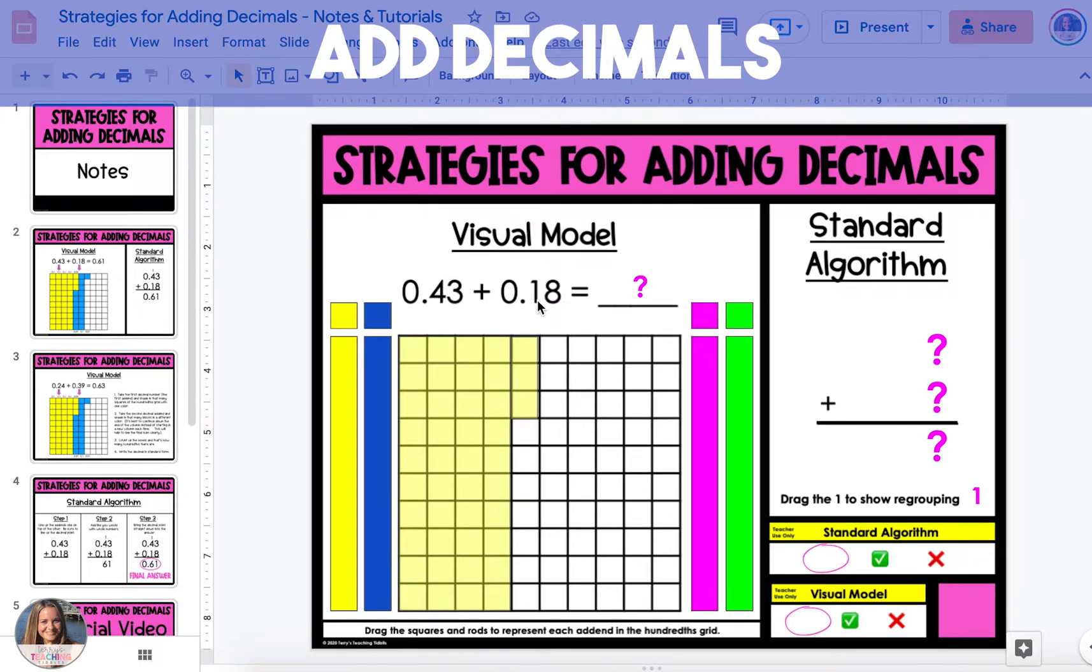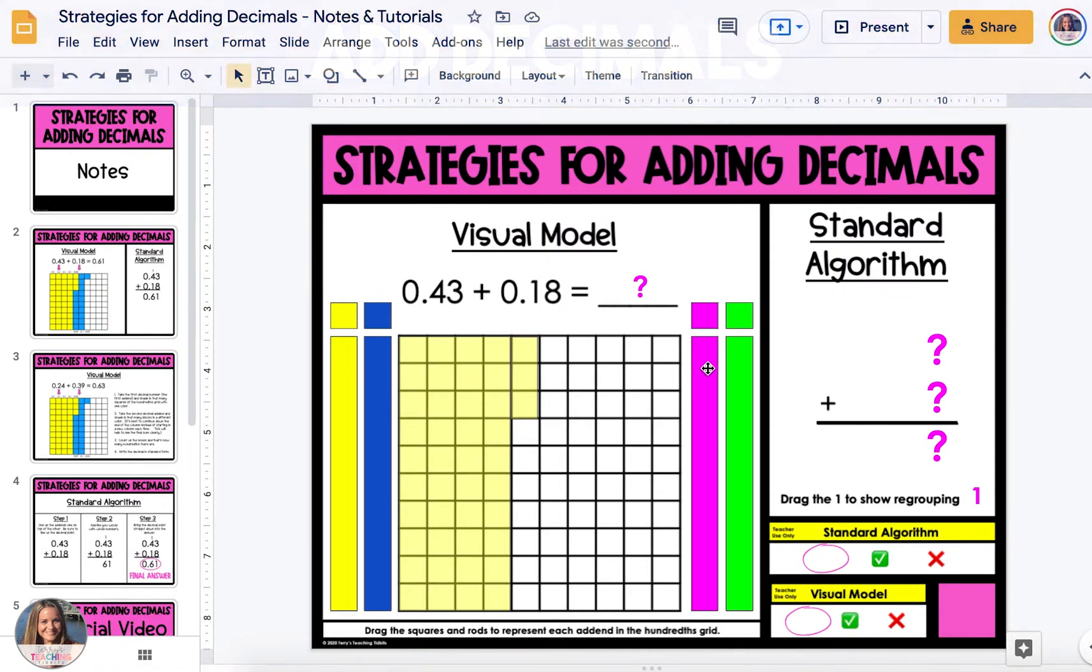To shade in the second addend 18 hundredths, we're going to select a different color. If you're having trouble dragging the rods or columns correctly over the model, one tip is to zoom in on the slides.